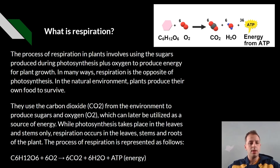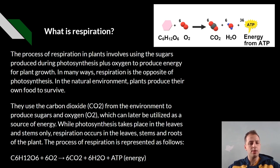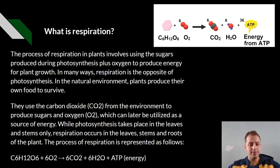What is respiration? The process of respiration in plants involves using the sugars produced during photosynthesis plus oxygen to produce energy for plant growth. In many ways, respiration is the opposite of photosynthesis. In the natural environment, plants produce their own food to survive. They use carbon dioxide from the environment to produce sugars and oxygen, which can later be utilised as a source of energy.